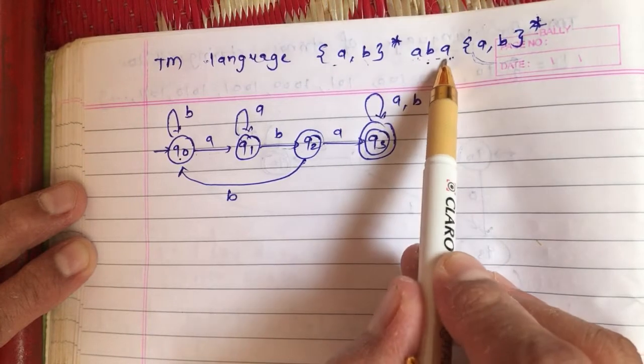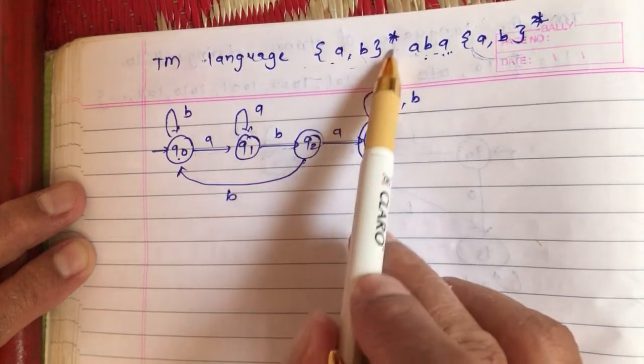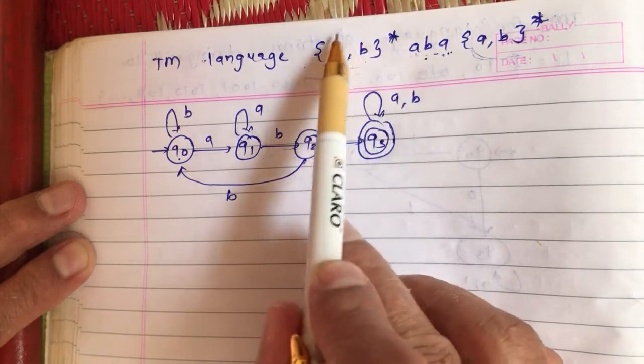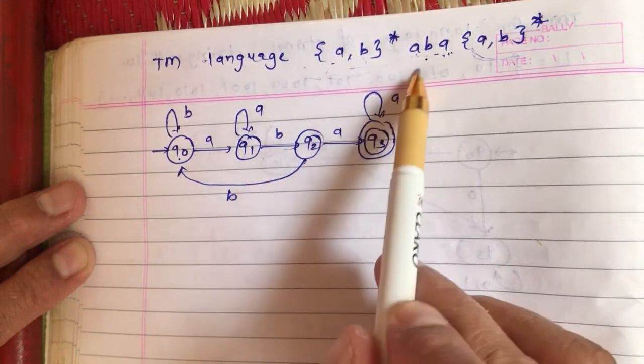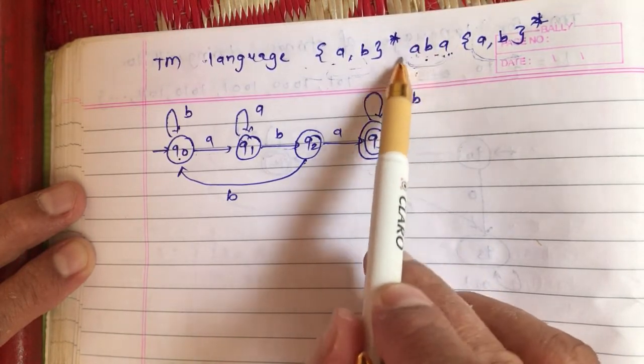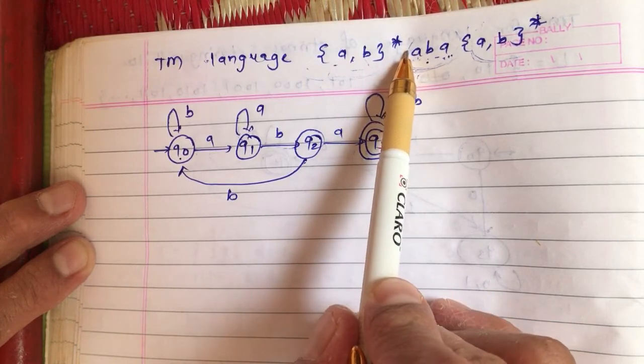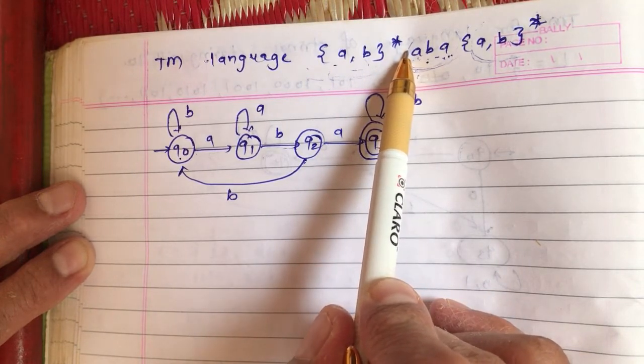In the Turing machine, once I find aba I can enter into an accepting state ha. So processing before this becomes mandatory because until I get aba I should be able to process my string. If the entire string is finished and I don't enter into ha, we can claim that it is a rejecting string.